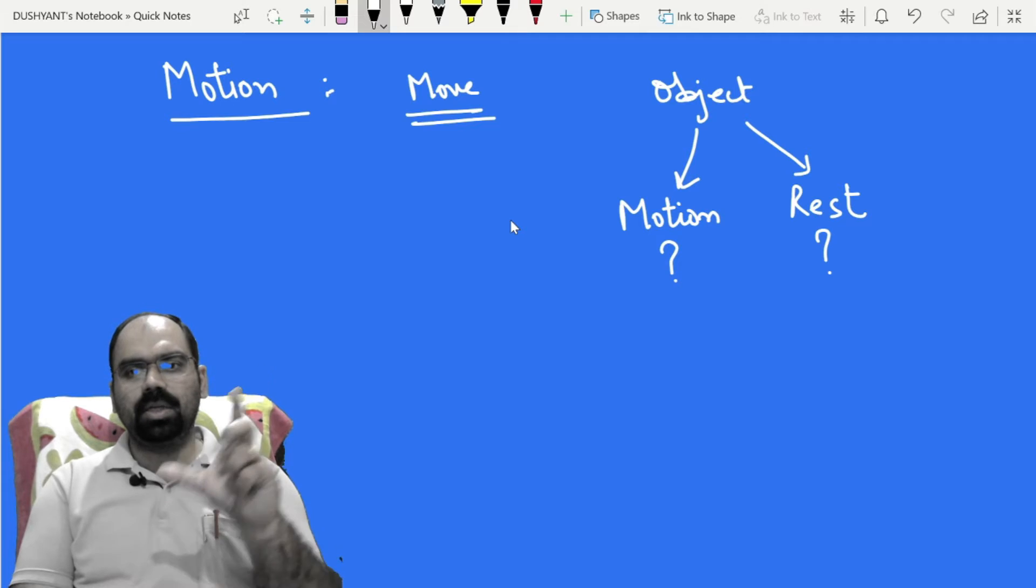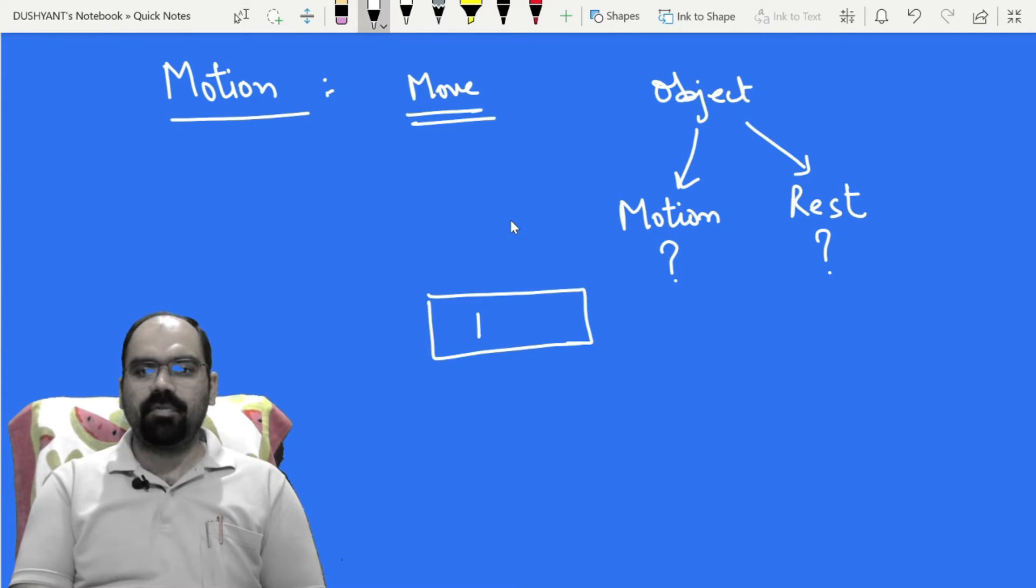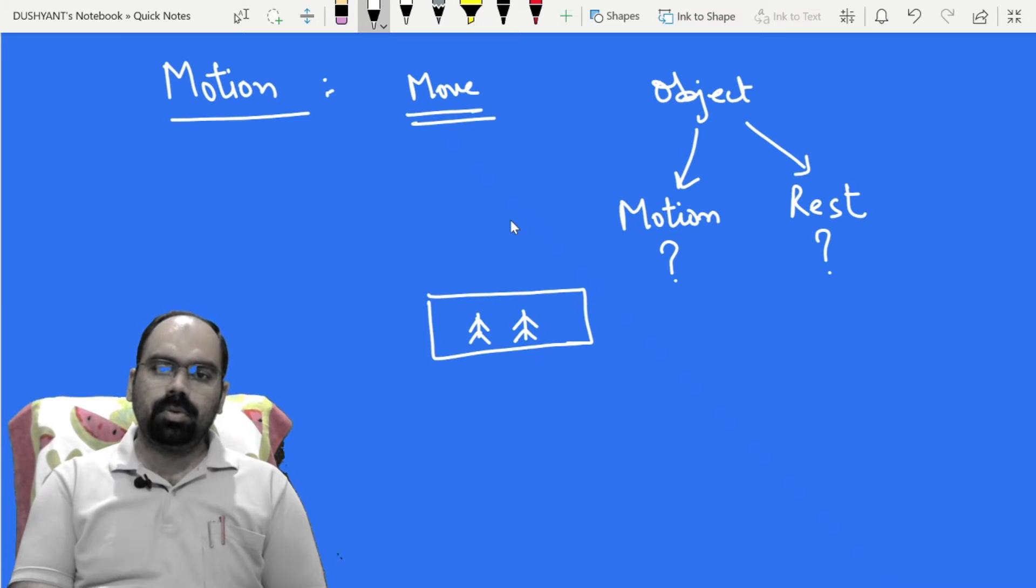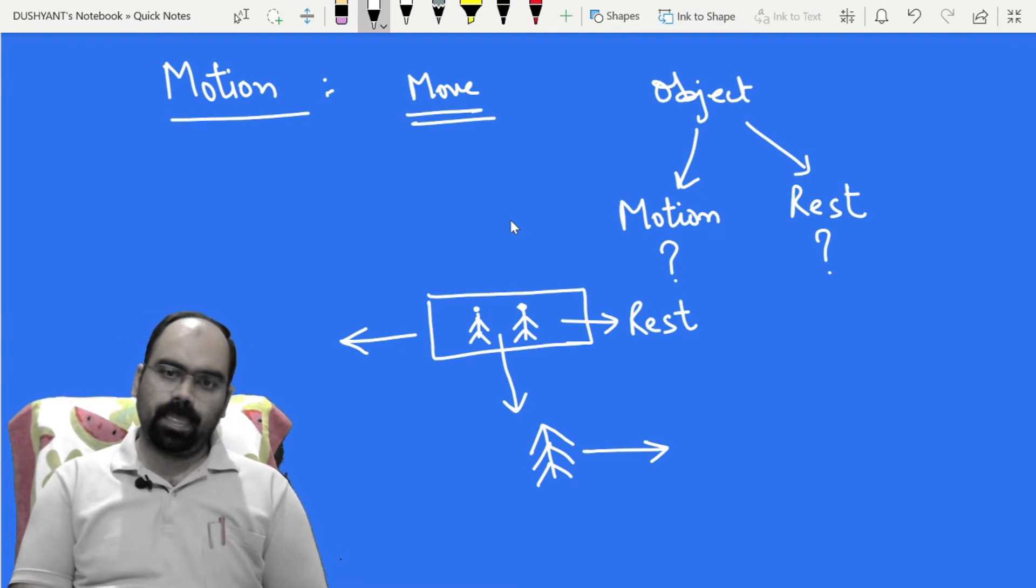That depends upon where that person, where that observer is. For example, if you are sitting in a bus, along with some other person. For you, your co-passenger may be in rest. But you will see the surrounding plants, trees. If your bus is moving in this direction, those objects, those trees are moving in opposite direction. Means for you inside the bus, for trees, they are in motion.